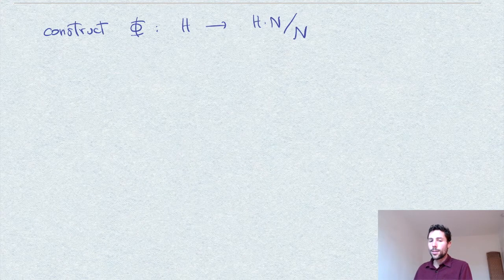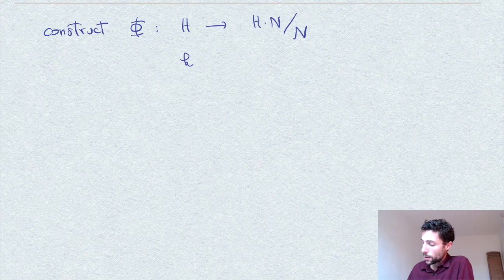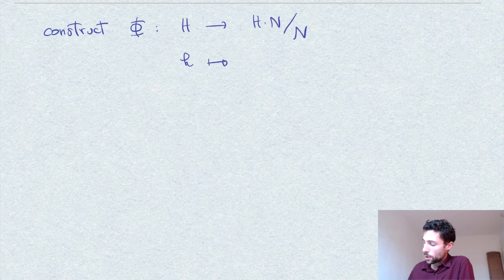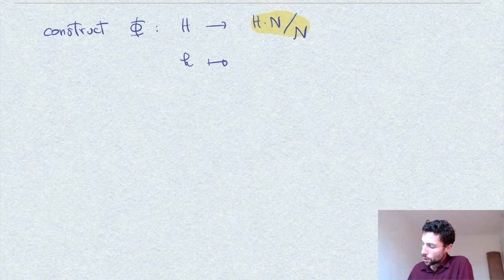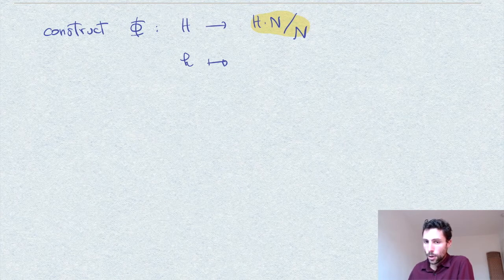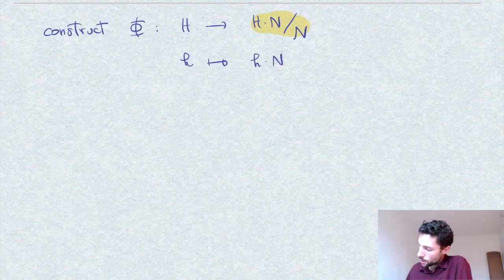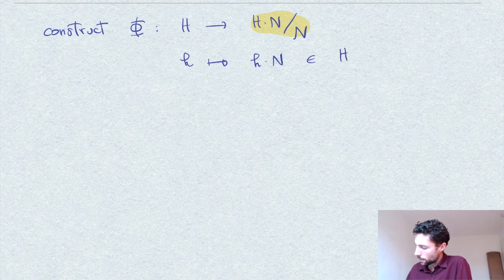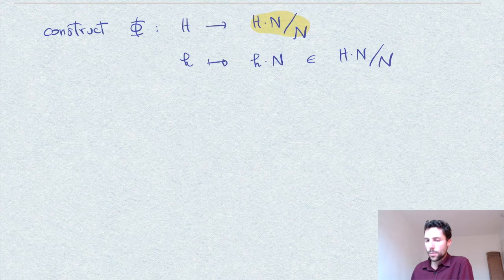Not much creativity is needed to come up with the map. On the target side we are in the group of left cosets of N inside HN. So we map a little element h in H to the left coset hN as an element of HN/N. That is, we define φ(h) = hN.